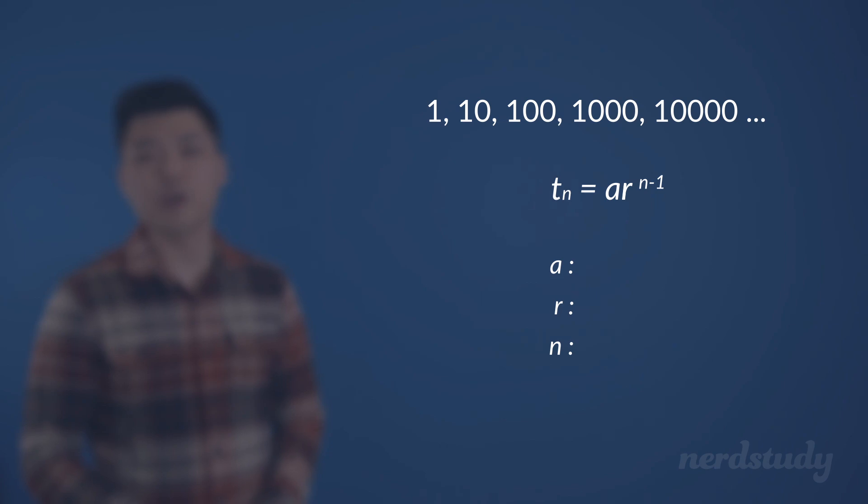It's clear to us that we are not looking for a common difference here, since there is no constant number that it goes up by. Instead, we are looking for a common ratio, which is the constant multiplication of a certain number from one term to the next.